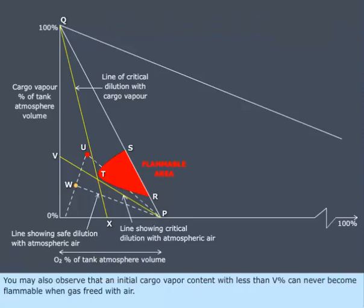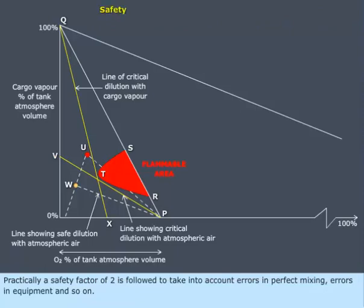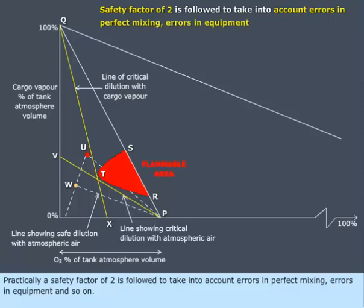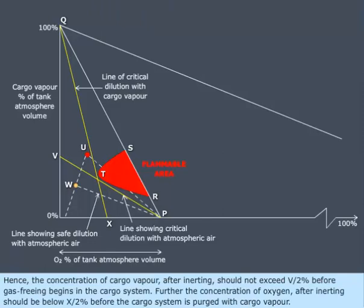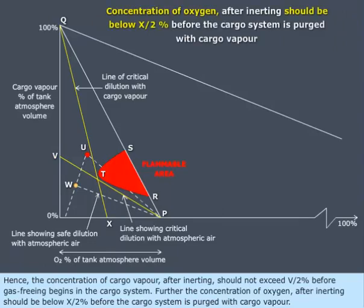An initial cargo vapor content with less than V percent can never become flammable when gas freed with air. Practically, a safety factor of 2 is followed to take into account errors in perfect mixing, errors in equipment, and so on. Hence, the concentration of cargo vapor after inerting should not exceed V divided by 2 percent before gas freeing begins in the cargo system. Further, the concentration of oxygen after inerting should be below X divided by 2 percent before the cargo system is purged with cargo vapor.